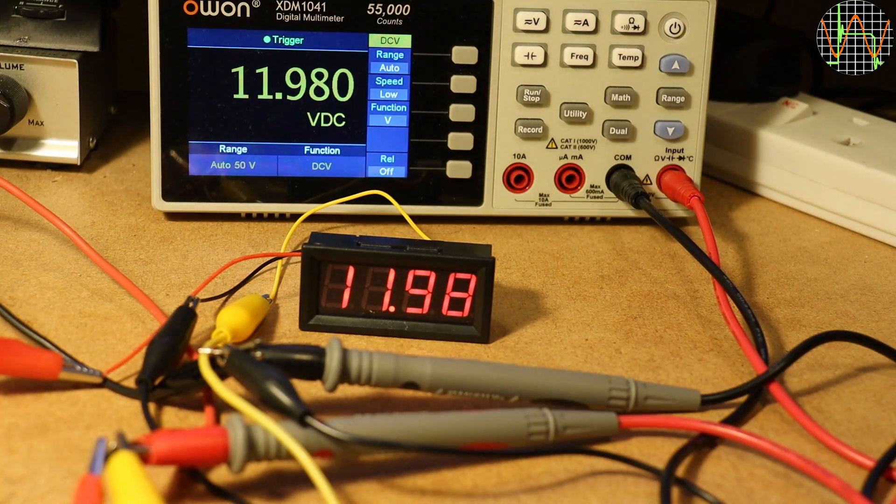If you wonder why it is so accurate, the reason is that these panel meters usually have a little trim pot that allows you to adjust the reading to some degree. I actually calibrated this one at 12V so it is fairly accurate at least around the calibration point.